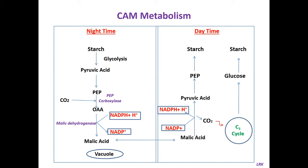During the daytime, the malic acid diffuses out from the vacuole and undergoes oxidative decarboxylation, releasing carbon dioxide. This carbon dioxide enters into the C3 cycle — so both C4 and C3 cycles take place here. Malic acid liberates carbon dioxide, which enters into C3 cycle; malic acid is converted back to pyruvic acid, which is later converted to starch. The carbon dioxide that entered into C3 cycle is reduced to glucose in the cytoplasm. This is CAM metabolism.